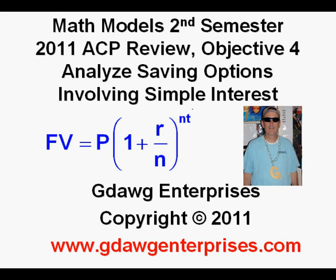This has been Math Model second semester 2011 ACP review objective 4. Analyze savings options involving simple interest.